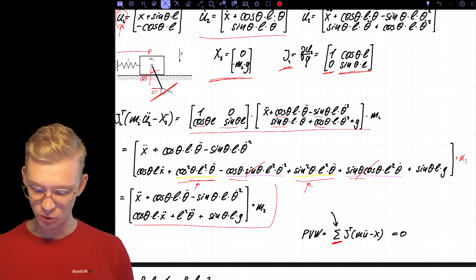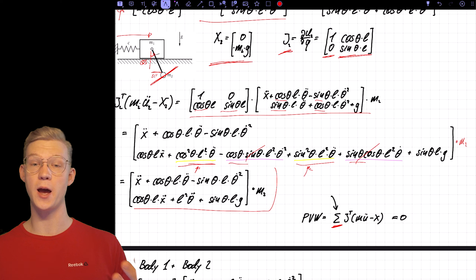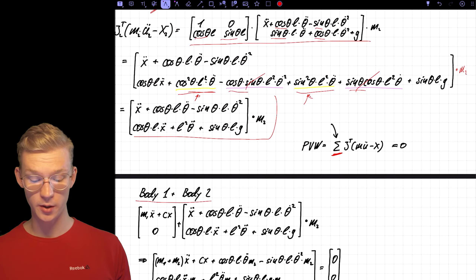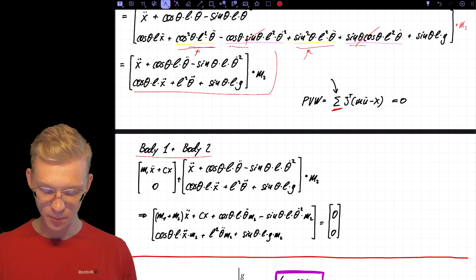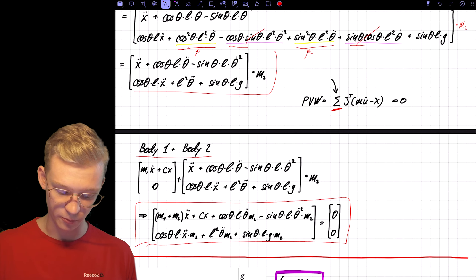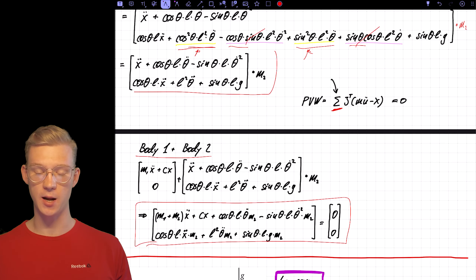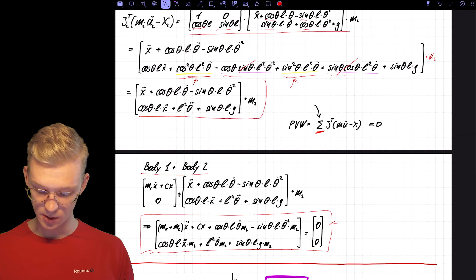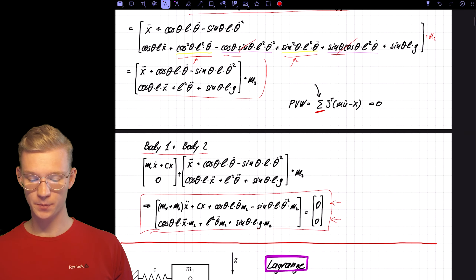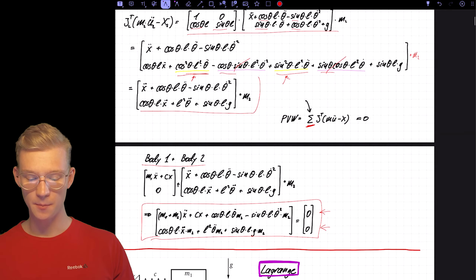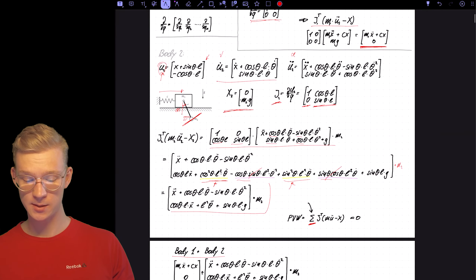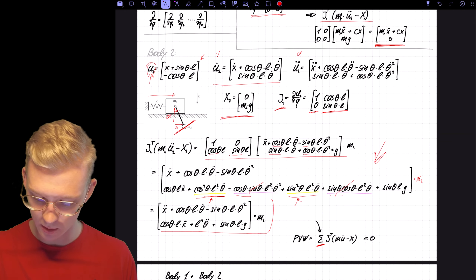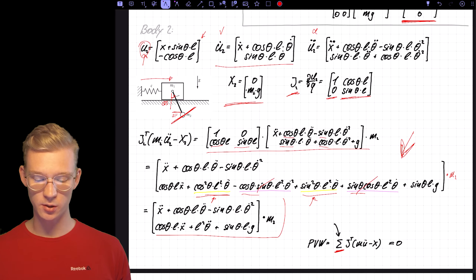Now we again combine them — add both together — to get the principle of virtual work. We sum up the equation for body 1 and the equation for body 2, and we get our two equations of motion for a two-mass system with two degrees of freedom. This is equation 1 and this is equation 2. It's a very simple approach, with the significant advantage that we don't have to consider reaction forces, but we still have to do a lot of work to arrive at our equations of motion.